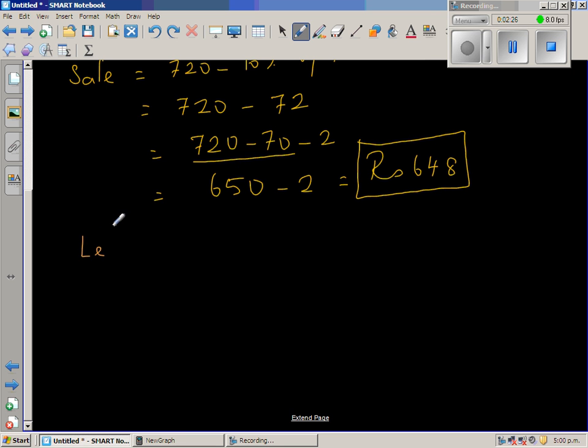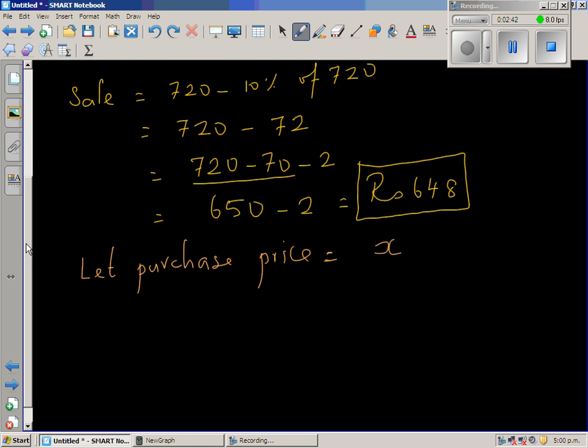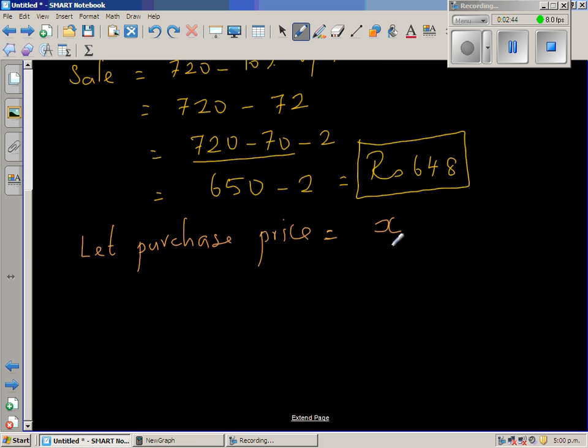Let the purchase price of the book be x. On this purchase price, if you add 20%, you get 648. So can I say x, which is the purchase price, plus 20% of x gives you 648.